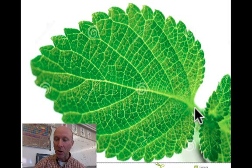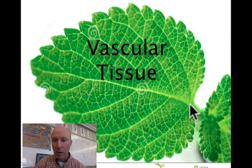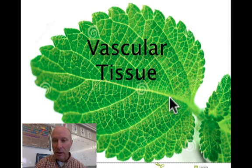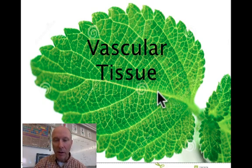Inside the petiole is vascular tissue. These are tubes that are not unlike your own blood vessels. They carry, instead of blood, water, nutrients, and food that the plant makes to and from every cell of the leaf.